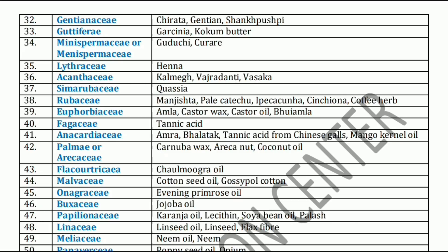Vasaka's chemical constituent is Vasicine. Next is Simaroubaceae. Simaroubaceae has Quassia. Next family is Rubiaceae family. Rubiaceae family includes Manjistha, Pale Catechu, Ipecacuanha, Cinchona, and Coffee herb.